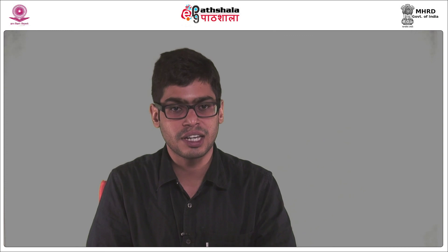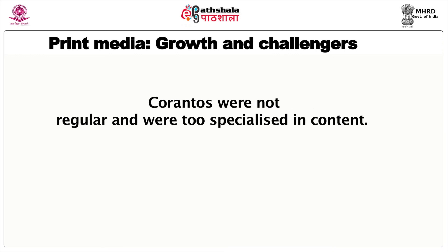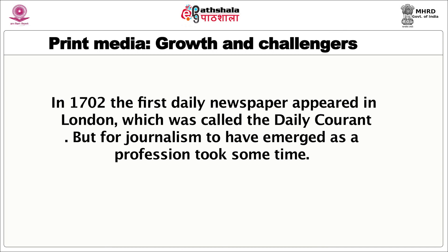The presses developed soon after were used mainly for the publication of books, especially religious texts like the Bible. But it was only two centuries later, in 1621, that a very rudimentary prototype of the modern newspaper — a news sheet called the Corantho — appeared in the streets of London. Coranthos were not regular and were too specialized in content. The first report of daily news came in the reporting on parliamentary proceedings in 1628, referred to as diurnals. In 1702, the first daily newspaper appeared in London, called the Daily Courant.